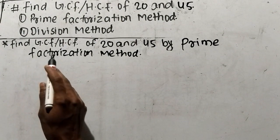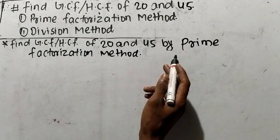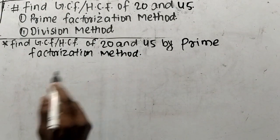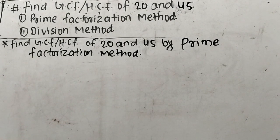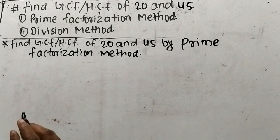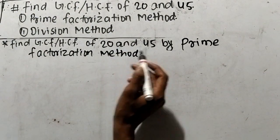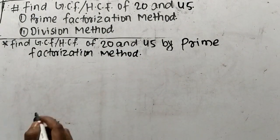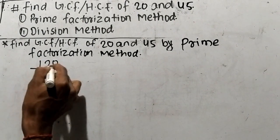Let's find out GCF or HCF of 20 and 45 by prime factorization method. While finding out GCF or HCF by prime factorization method, first of all we have to find out the prime factors of the given numbers. The numbers here are 20 and 45, so let's find out the prime factors of 20 first.